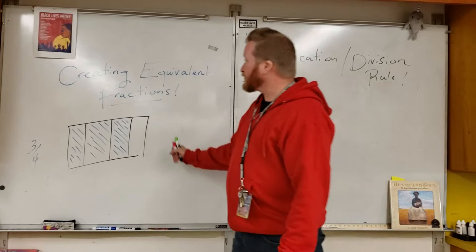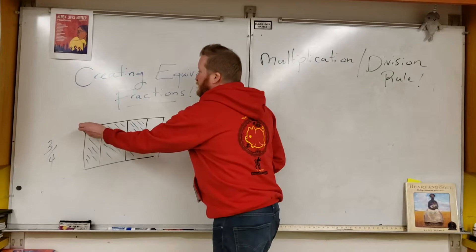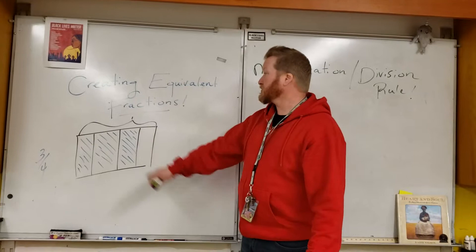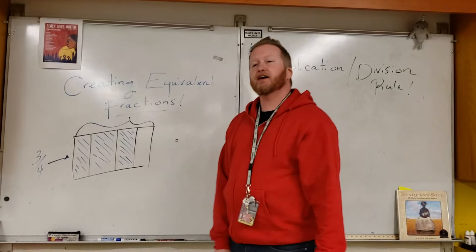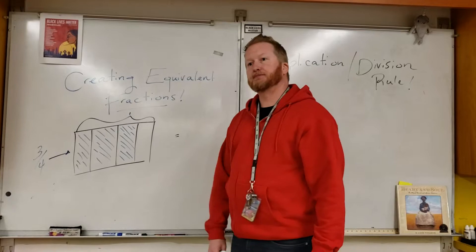The first strategy to use is a visual model. This is a visual model that shows three-fourths. We have one whole. We have divided it into four equal parts of which three are shaded. So if I was to use a visual model and I wanted to create an equivalent fraction, Quincy, what is one thing that I could do to help me find an equivalent fraction for three-fourths?